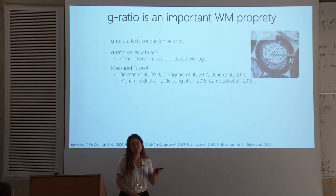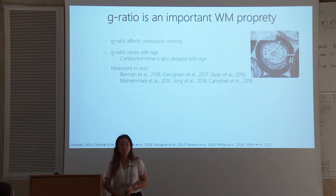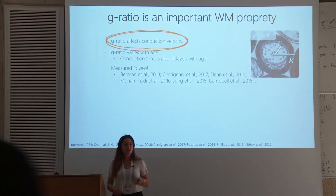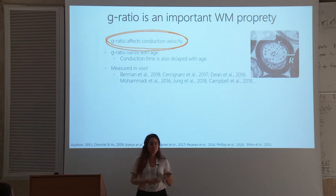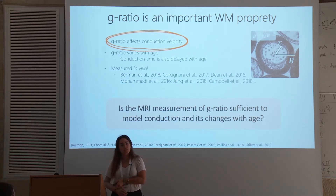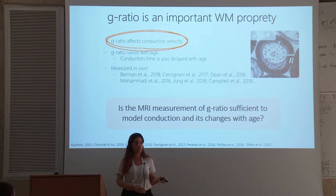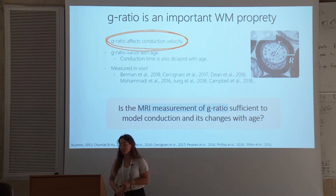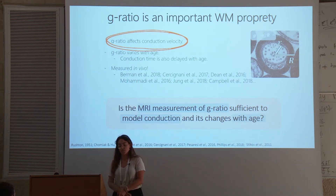Ever since a 2012 study came out showing us how to measure g-ratio using MRI, many studies have used this measurement to say something about the brain. We always motivate our studies by saying it's interesting because g-ratio affects conduction. But in vivo, it's not clear if there's enough variance. So more specifically, the goal of this study was to test whether the MRI measurement of g-ratio can be used to model conduction and its changes as a function of age. I'm going to start with briefly describing how we can measure g-ratio using MRI, then how we use this measurement to model conduction, and finally see whether it changes with age.